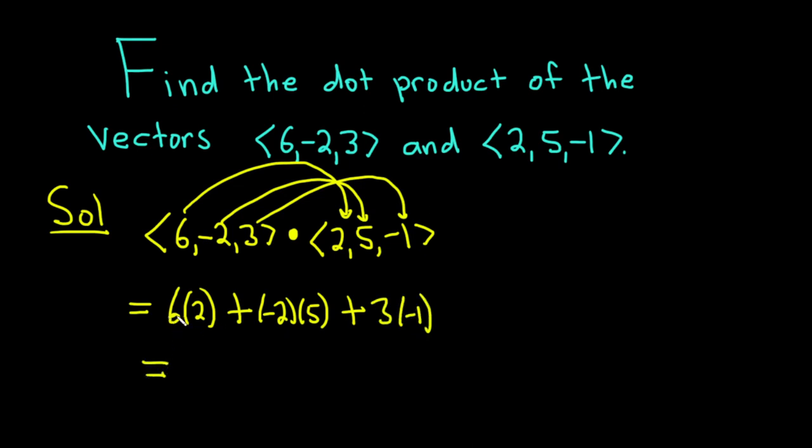This is equal to 6 times 2 is 12. Then negative 2 times 5 is negative 10. And 3 times negative 1 is negative 3.